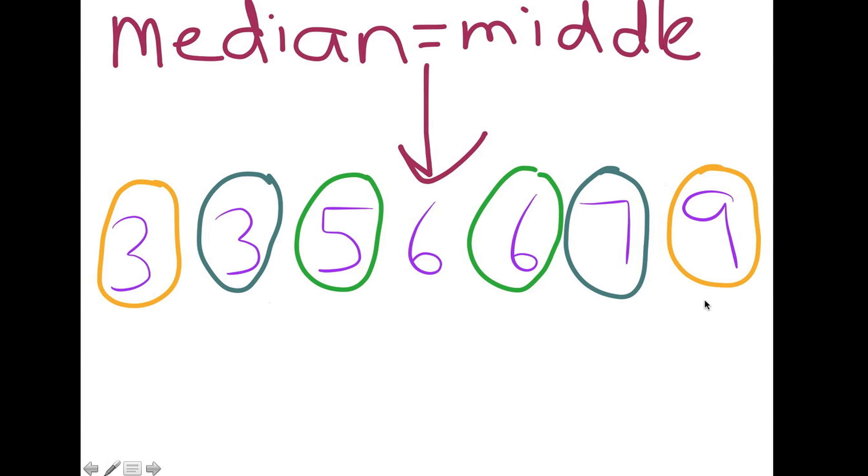So if there are seven numbers, the median will be the fourth one because it's the number in the middle.